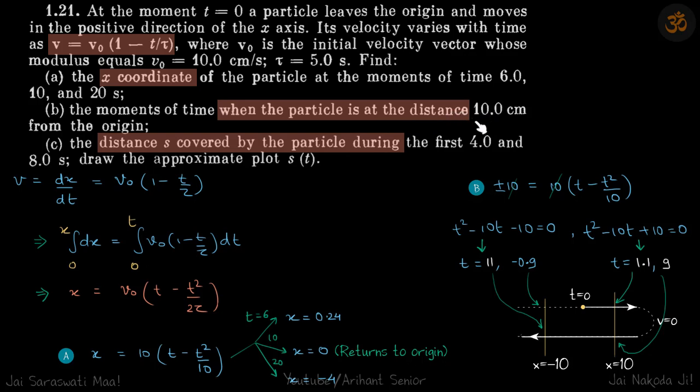We get v₀ times t minus t squared by 2 times tau, where tau is given as 5 seconds. We'll have two equations, both are quadratic, so we'll get four solutions, one of which will be negative. The other three are our answers—these are the time periods when the distance from the origin is 10 centimeters.